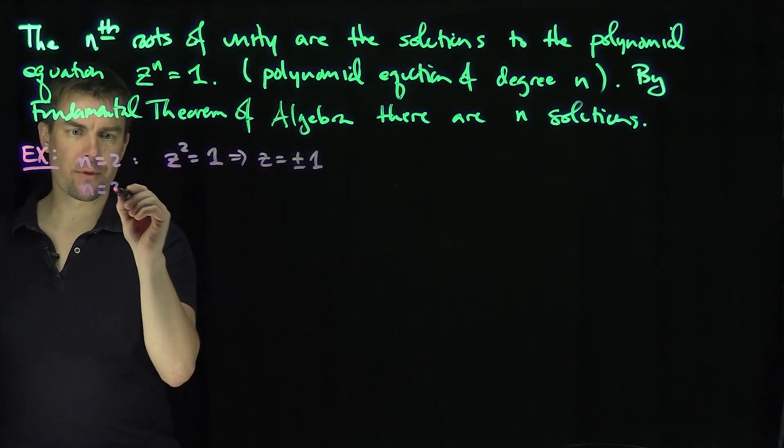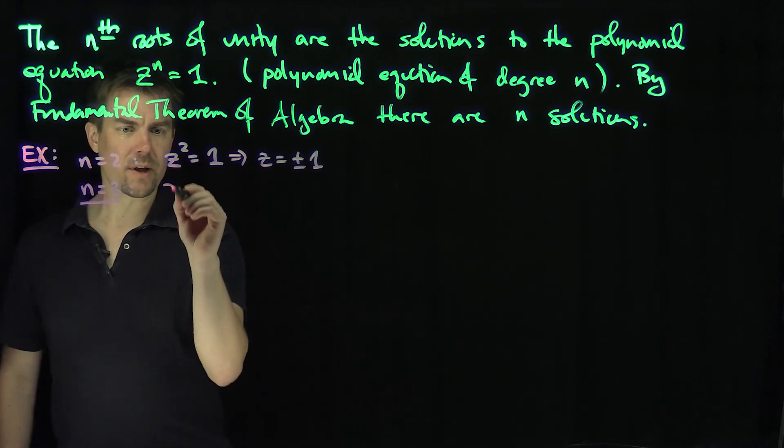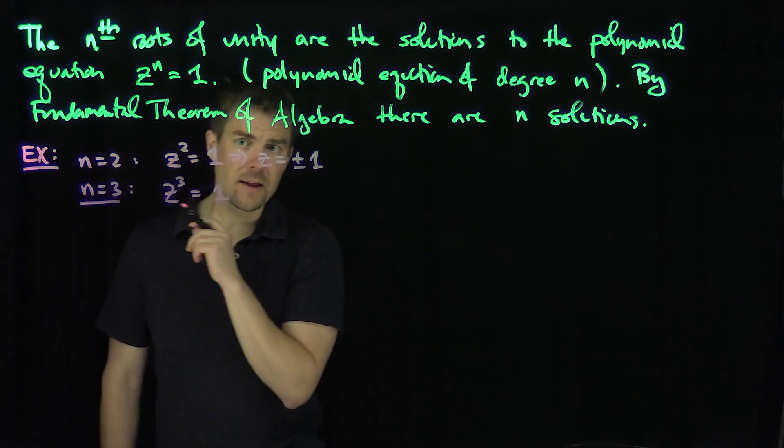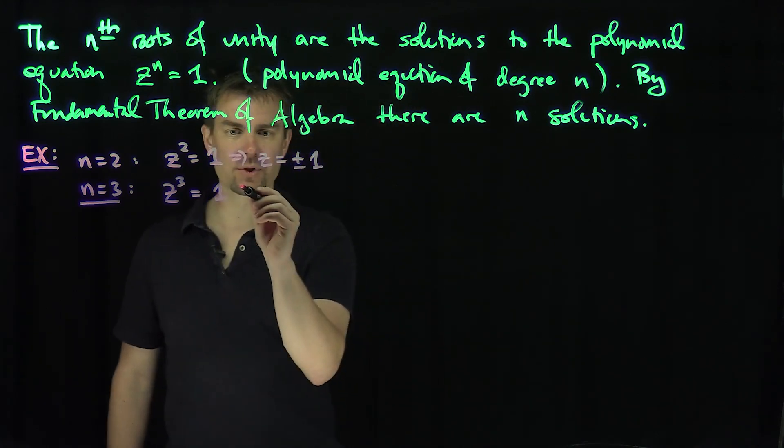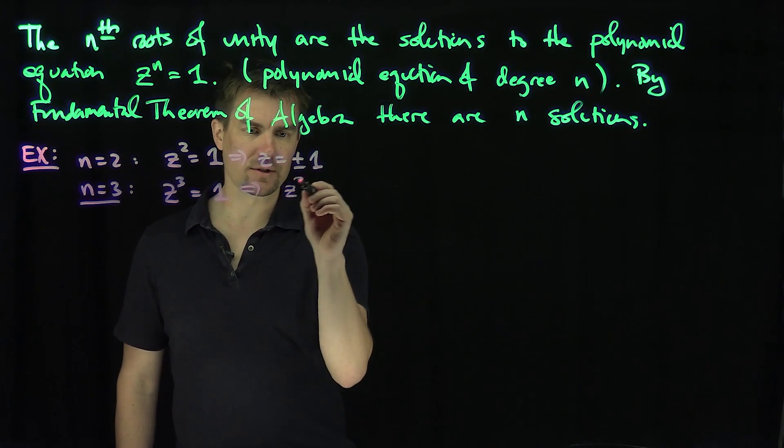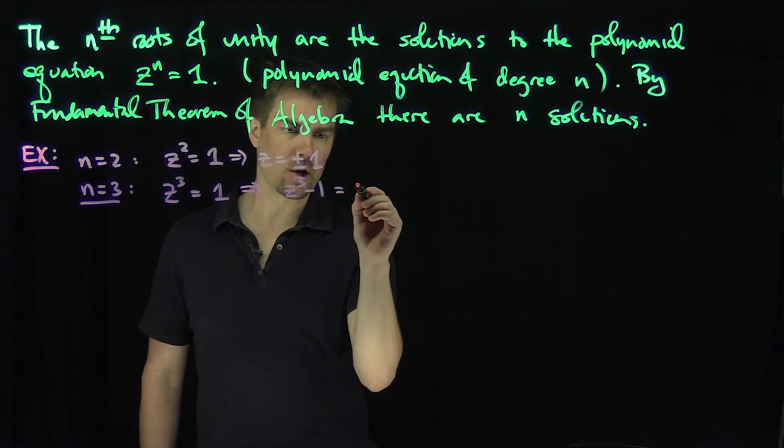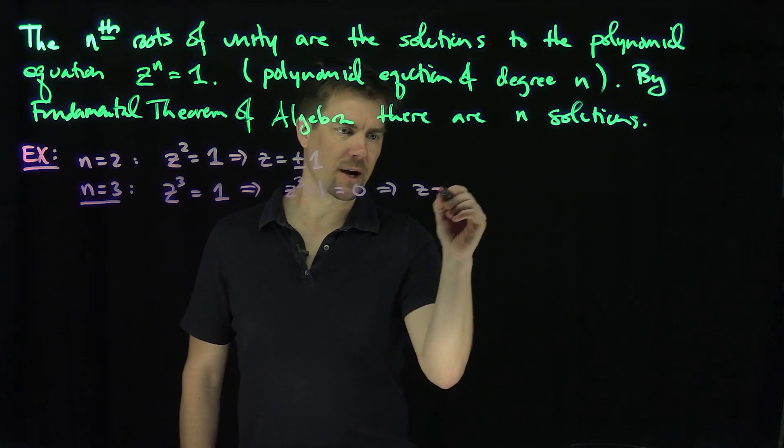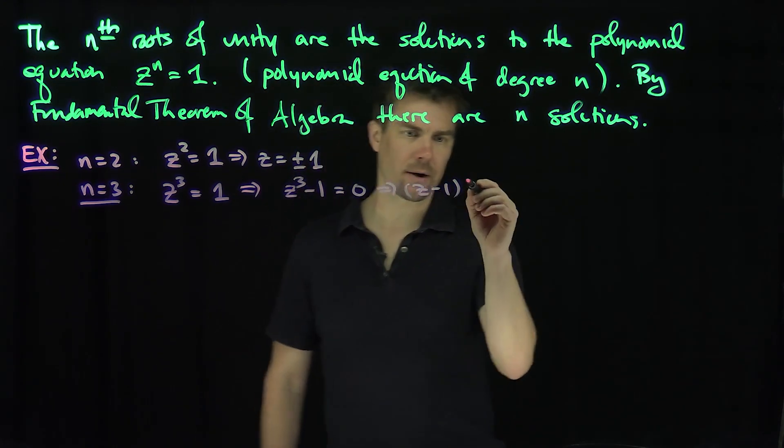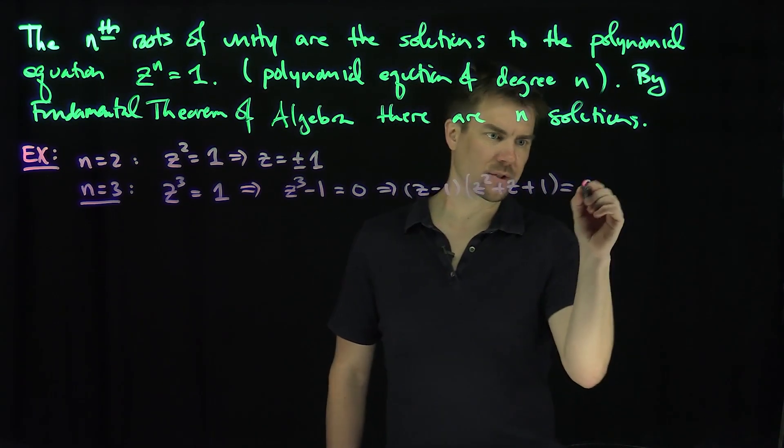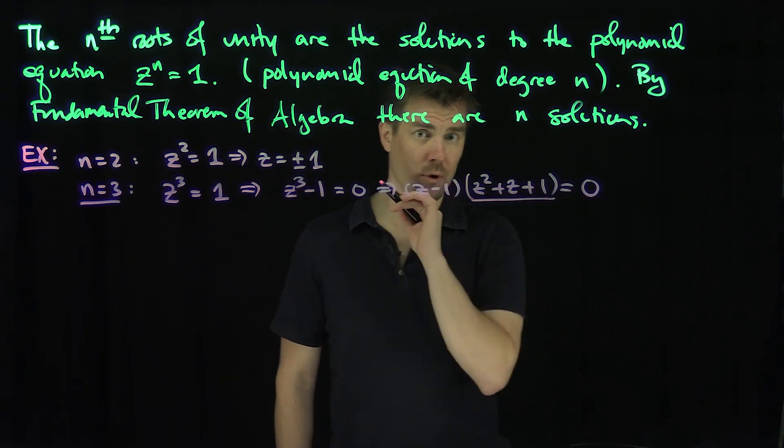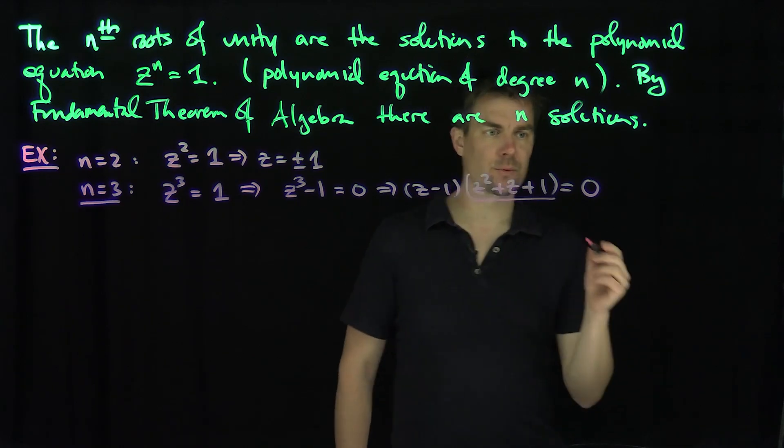When n is equal to 3, however, we get something more interesting. We get z cubed is equal to 1. What we could do is actually factor this. One approach to this would be the following: I can write this as z cubed minus 1 equals 0, which is z minus 1 times z squared plus z plus 1 equals 0. Then I can use the quadratic formula on this.